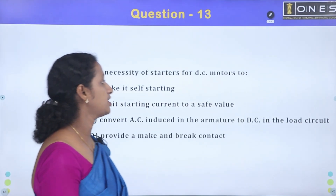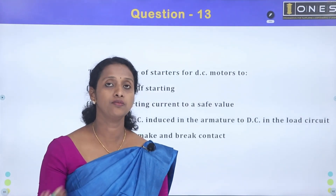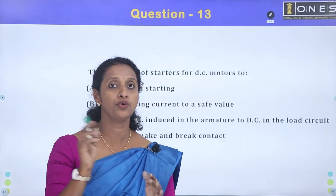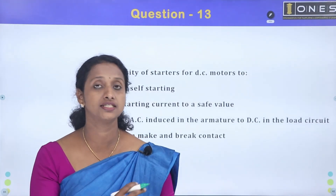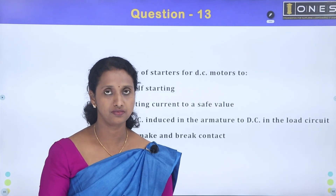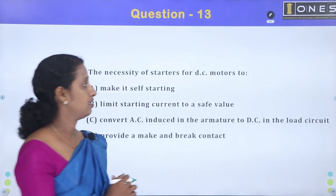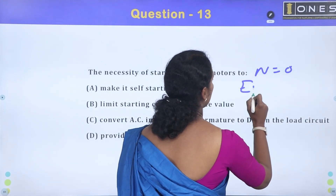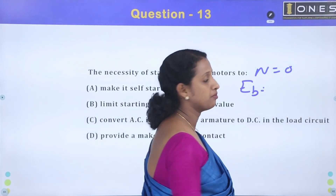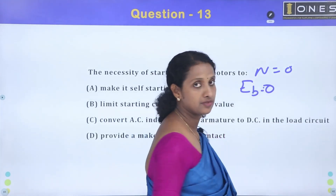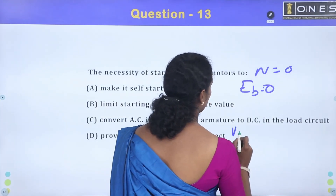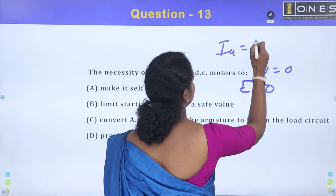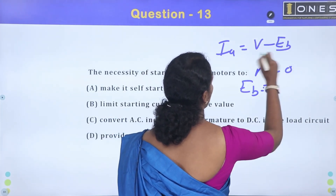The necessity of starters for DC motors — this is a very important question. When learning about this, we wonder: what is the necessity of a starter? At the time of starting, speed is zero. What happens to back EMF? Back EMF will also be zero. The current equation is: I = (V − E_B) / R_A.